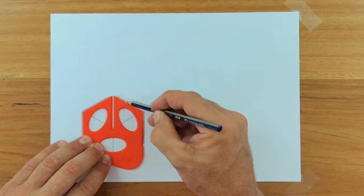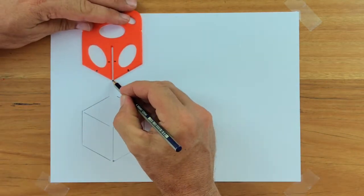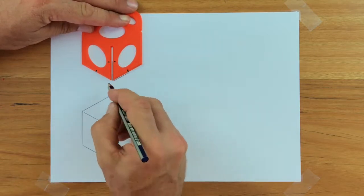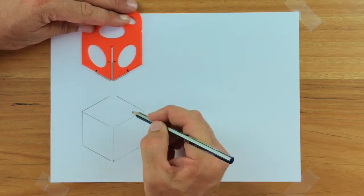What about if we wanted to draw a half size cube? I've put some marks halfway along each edge and I'm drawing the first three lines just to those halfway marks.